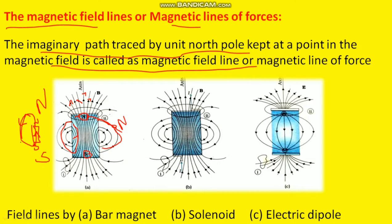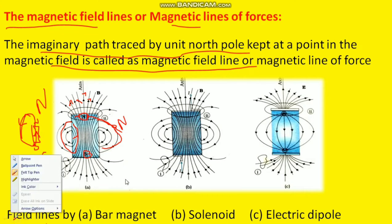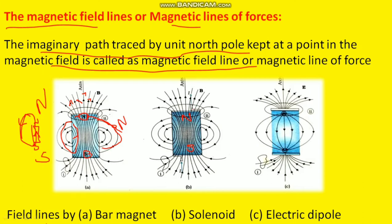The definition of a magnetic field line is the path traced by a unit North Pole kept in the magnetic field. In diagram A, these are the field lines due to a bar magnet, and in diagram B, these are the magnetic field lines due to a solenoid. A solenoid is exactly equivalent to a bar magnet, so the field lines produced around a solenoid are exactly equal to those produced by a magnet — both diagrams are essentially the same.